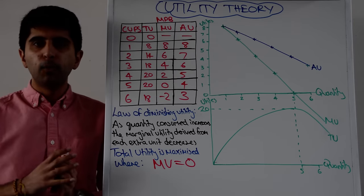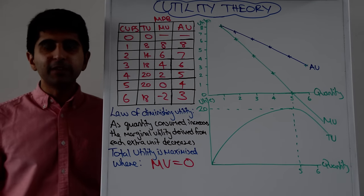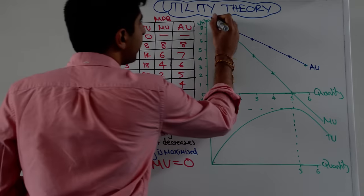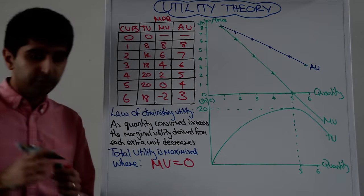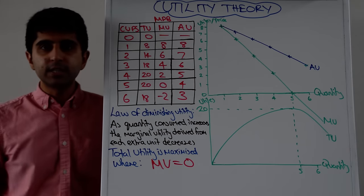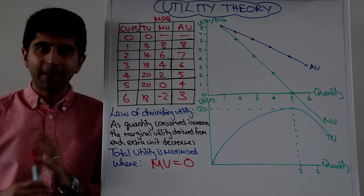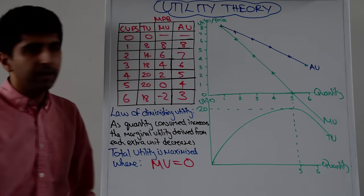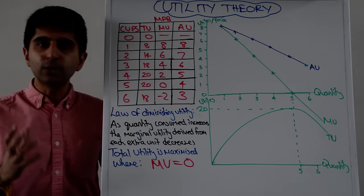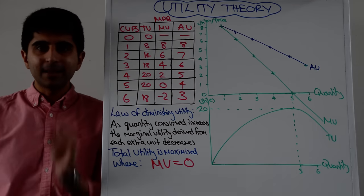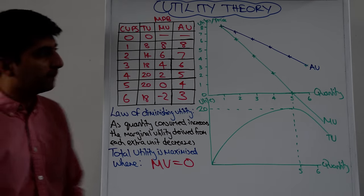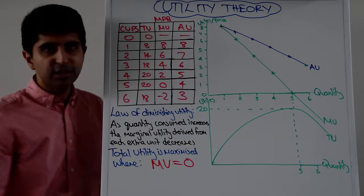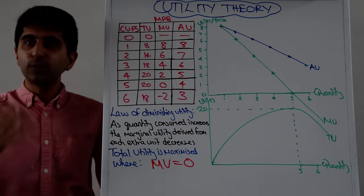Let's now understand how we can apply this idea more realistically to the real world. In the real world, economists simplify things and say that price is equal to utility, so we can amend our y-axis and have price on it as well as utils. If price is equal to utility, where will a rational consumer look to maximise their utility? In the real world there are prices for goods and services, so let's take an example. Let's say that the price of a cup of Coca-Cola is four pounds — where will a rational consumer consume to maximise their utility? They'll keep consuming units as long as what they are getting is more than what they are paying.